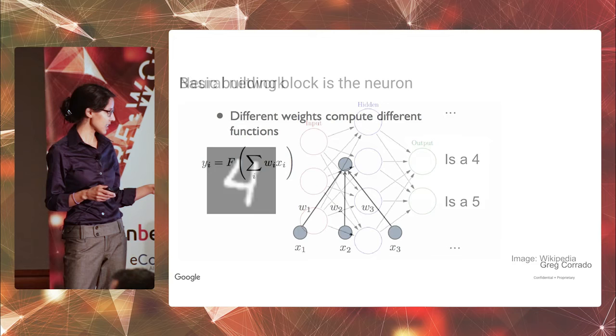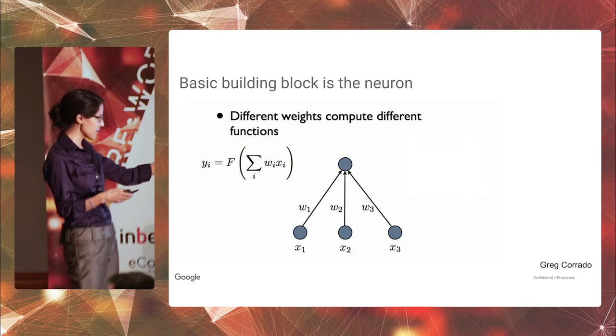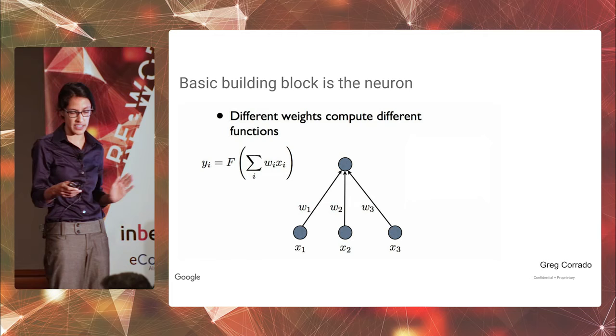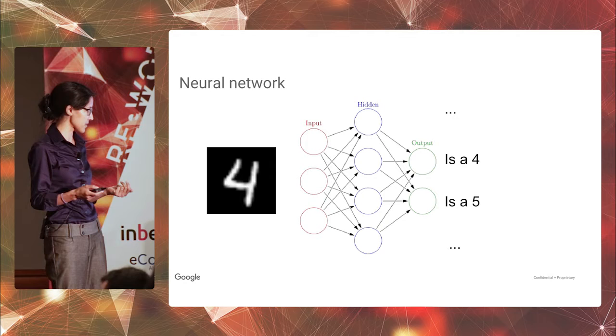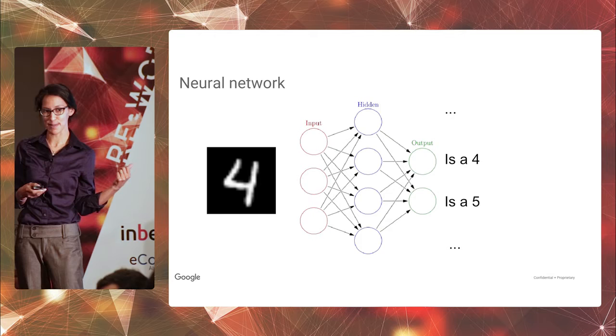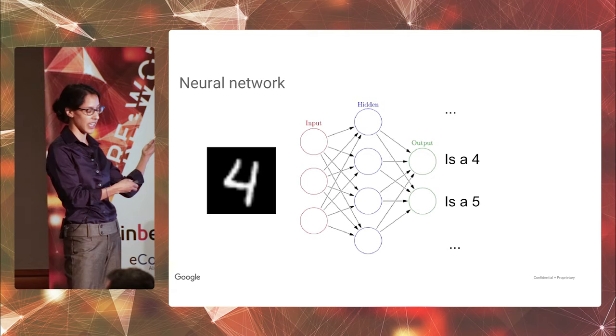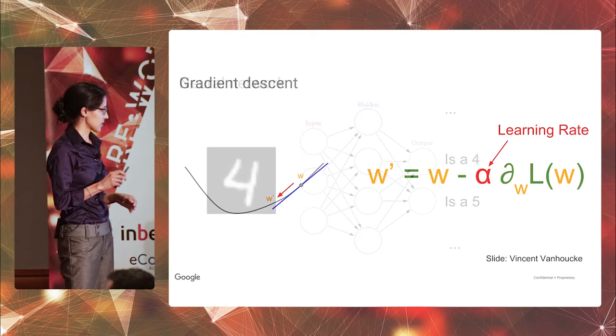So the basic building block of the neural network is the neuron. The job of the neuron is that it's just supposed to learn some little useful function of some data. So the x's are the inputs, the w's are the weights, and it's just learning these w's, these parameters to compute some function of the x's that then it sends out. When you compose a bunch of these neurons, you get a neural network. And the neural network is a very powerful class of function approximators. So probably you've seen this one before. The input to this neural network is an image. It's just the pixels of this image and the images of a handwritten digit. And the output is what digit is it?